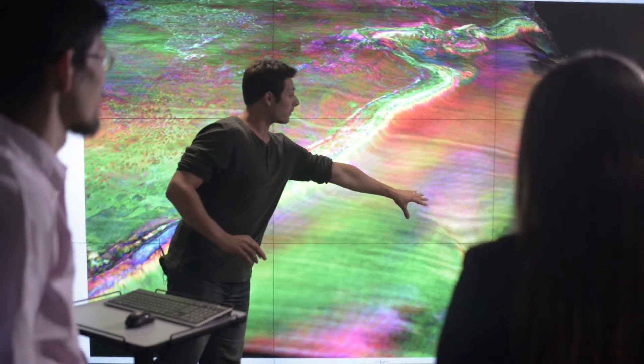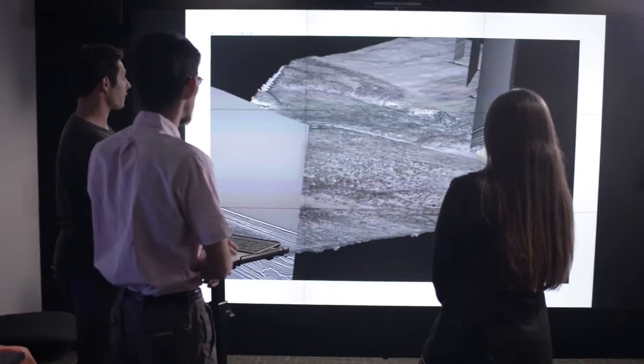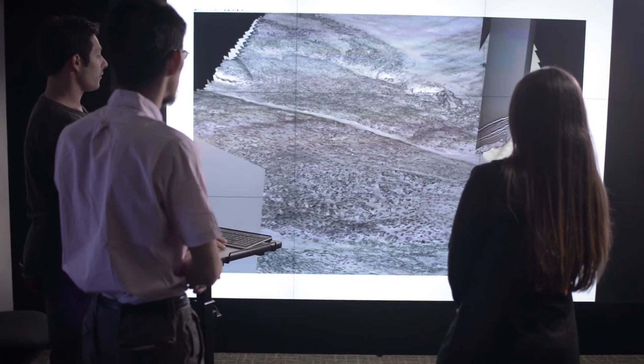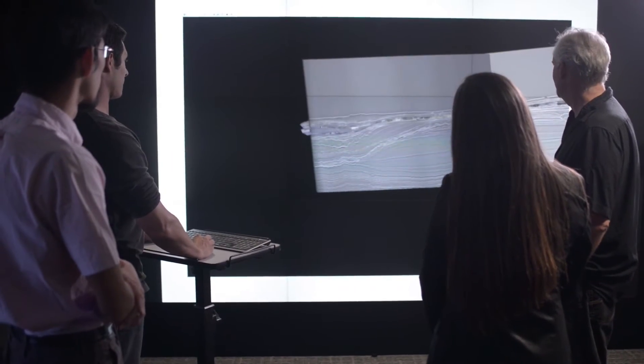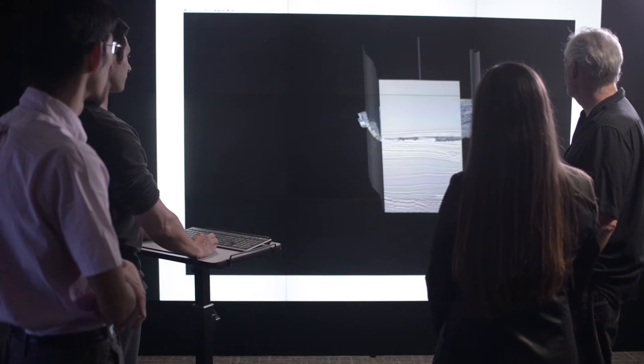Seismic stratigraphy is a sub-discipline of sedimentary geology. What we do is some classical geology, but using remote sensing images of the Earth — essentially a scan of the subsurface. I'm doing geological interpretation of geophysical datasets, namely 2D and 3D seismic data, that we use to interpret and visualize the architecture of the rocks in the subsurface, including the sequence of deposition and the order of deposition.